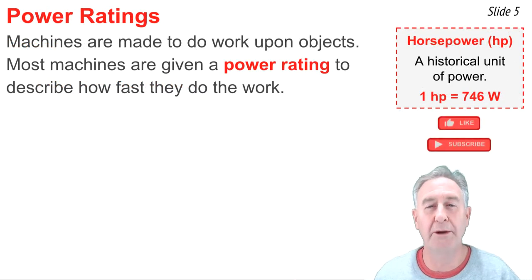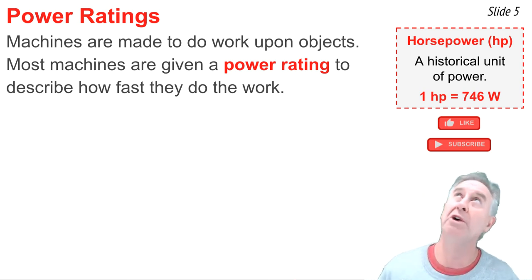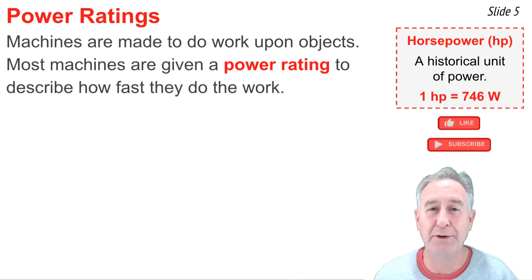Machines are made to do work upon objects, but machines don't have a work rating. Instead, they have what's called a power rating. Power ratings describe how fast that machine does its work, and they're usually listed in the unit horsepower. Horsepower is not a metric unit, but a more historical unit that dates back to the days in which we used to use horses to power most machines. One horsepower is equal to 746 watts.